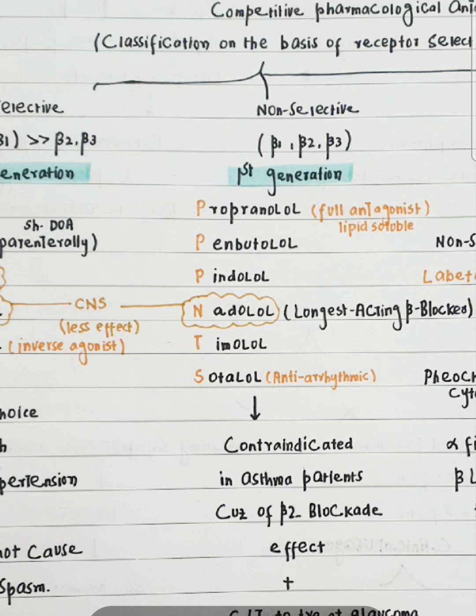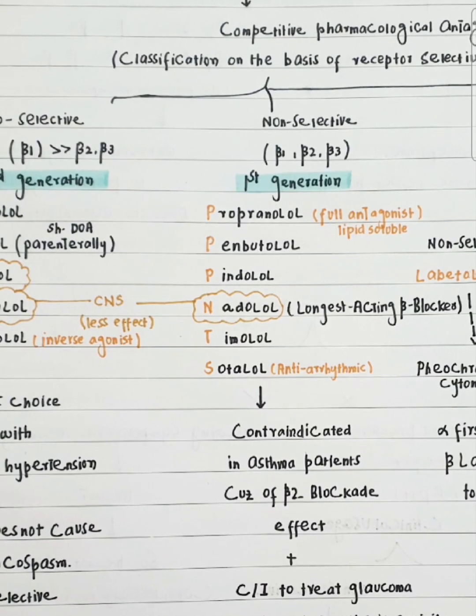Let's talk about the names of the first generation drugs. We will remember PPP and NTS. PPP is for Propranolol, Penbutolol, Pindolol. NTS is Nadolol, Timolol, and Sotalol.